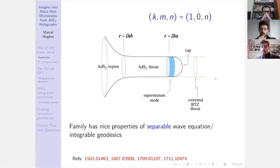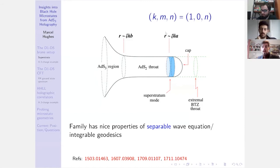Instead of going infinitely deep in the throat — which would place the horizon somewhere — here we have a smooth cap off. It doesn't have to be this particular geometry shown; there can be wiggles or other structures. There is no singularity and the geometry caps off just before what would be horizon scales. This particular class is a special one — the bumpy spherical cow type solutions — but they have nice properties like separable wave equations and integrable geodesics. These are found in a fairly recent series of references.